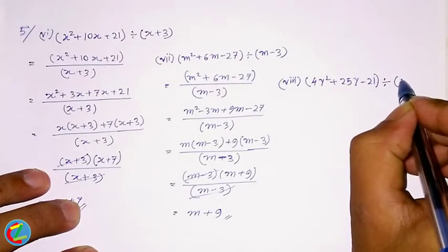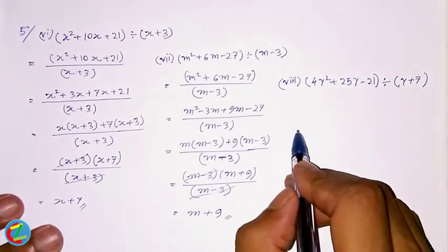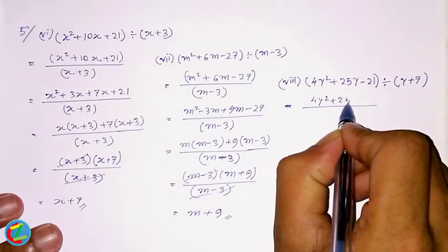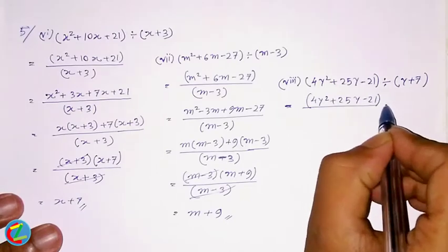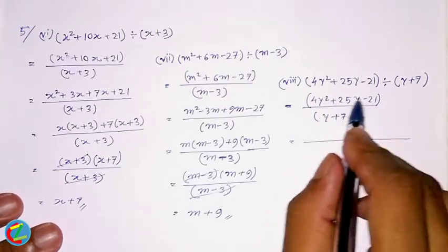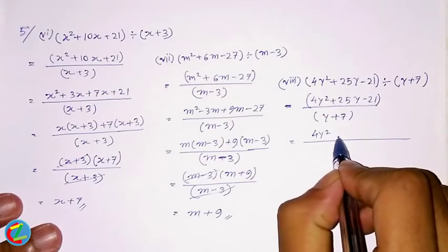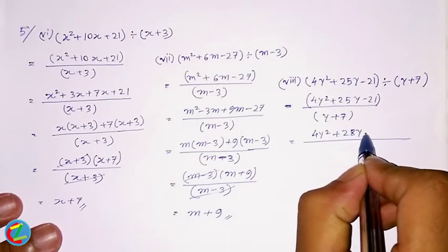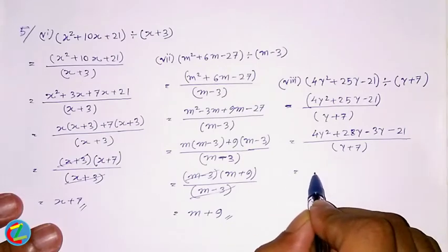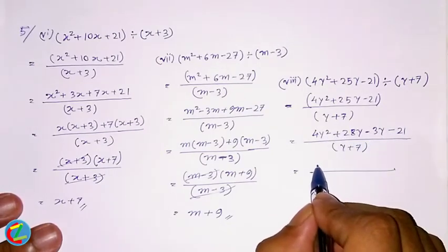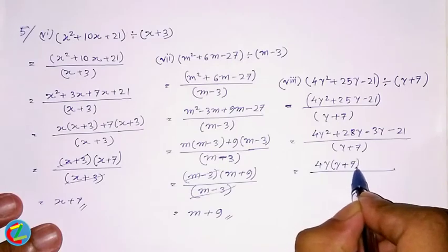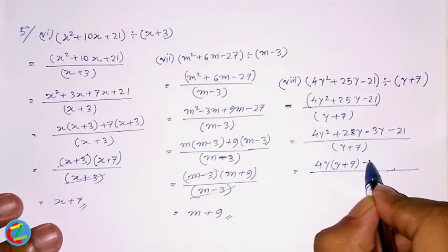The 4y² + 25y - 21 divided by y + 7. If you put it back to the end, 2y is the other way. Then if you compare 2y, this is the other way. When you compare 4y, we are adding 1y. In the other way, the number is minus 3.